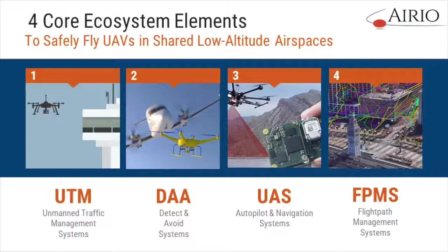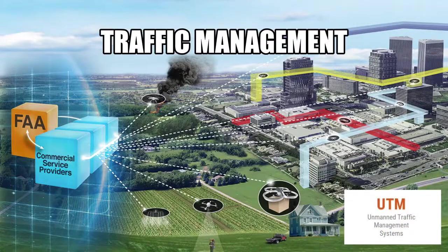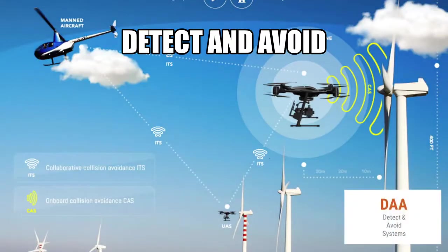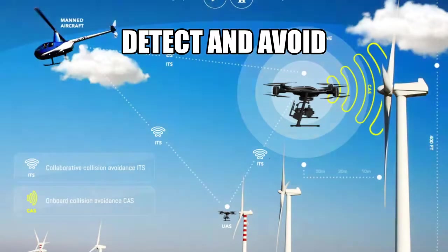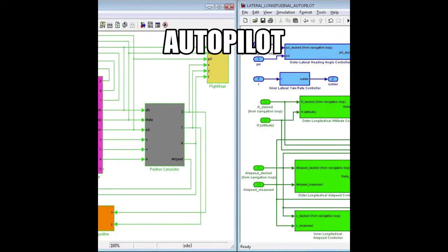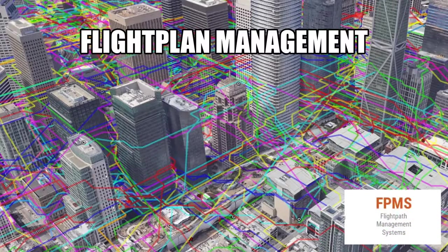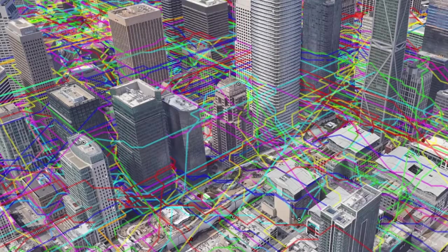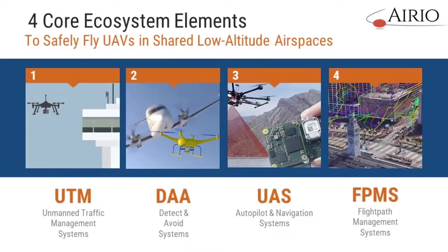It occurred to us that in the existing paradigm, there are four core ecosystem components needed to safely manage multiple vehicles in a shared airspace: a traffic management system to coordinate among vehicles in the entire airspace; mid-flight collision avoidance systems, mostly detect and avoid; an autopilot or other navigational system capable of executing the flight plan within the UAV; and a flight plan management system that defines the mission and builds deconfliction into the flight path. This realization led us to recognize that what we are facing isn't a traffic management problem, but a flight path design problem.